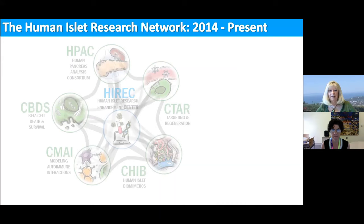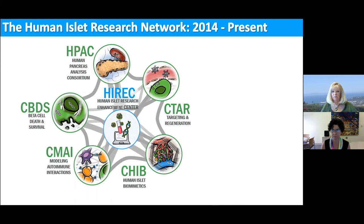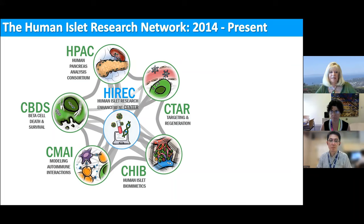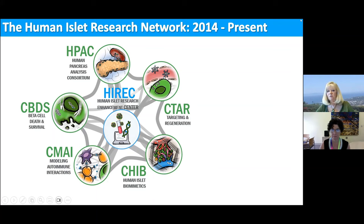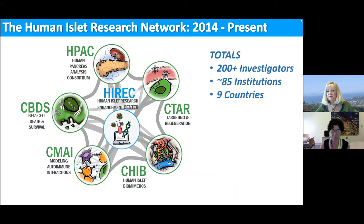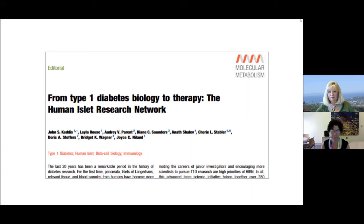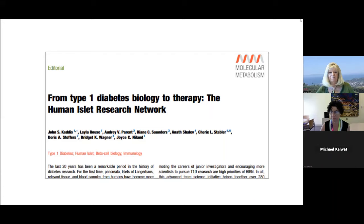The HERN is a set of consortia that studies islet cells in type 1 diabetes. We have the HPAC (Human Pancreas Analysis Consortium), CBDS for beta cell death and survival, the Consortium on Modeling Autoimmune Interactions, the Human Islet Biomimetic Consortium, and CTAR for Targeting and Regeneration. I'm co-principal investigator of the HIREC, the Human Islet Research Enhancement Center, along with John Cadiz. There are now over 200 investigators at more than 85 institutions across nine countries. A series was recently published in Molecular Metabolism about the consortium and its various research objectives.